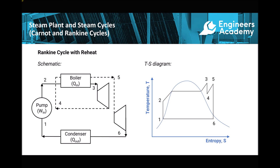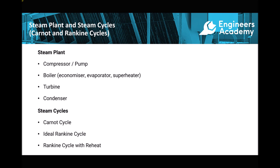To summarise: in this video we've looked at steam power plant components and devices. We've looked at different steam cycles and their characteristics. The Carnot cycle produces the highest theoretical efficiency but has practical problems. The ideal Rankine cycle uses superheated steam which causes less turbine corrosion when expanded, and uses a pump to move water rather than a compressor to compress steam. Finally, a modification using reheat and a second stage turbine improves the thermal efficiency of the steam cycle.